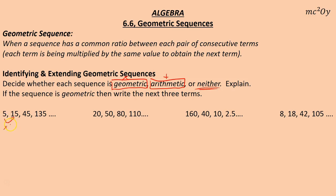In this case, 5 times what is 15? That's 3. 15 times 3 is 45, and 45 times 3 is 135. Since we're multiplying by the same thing each time, it is a geometric sequence.